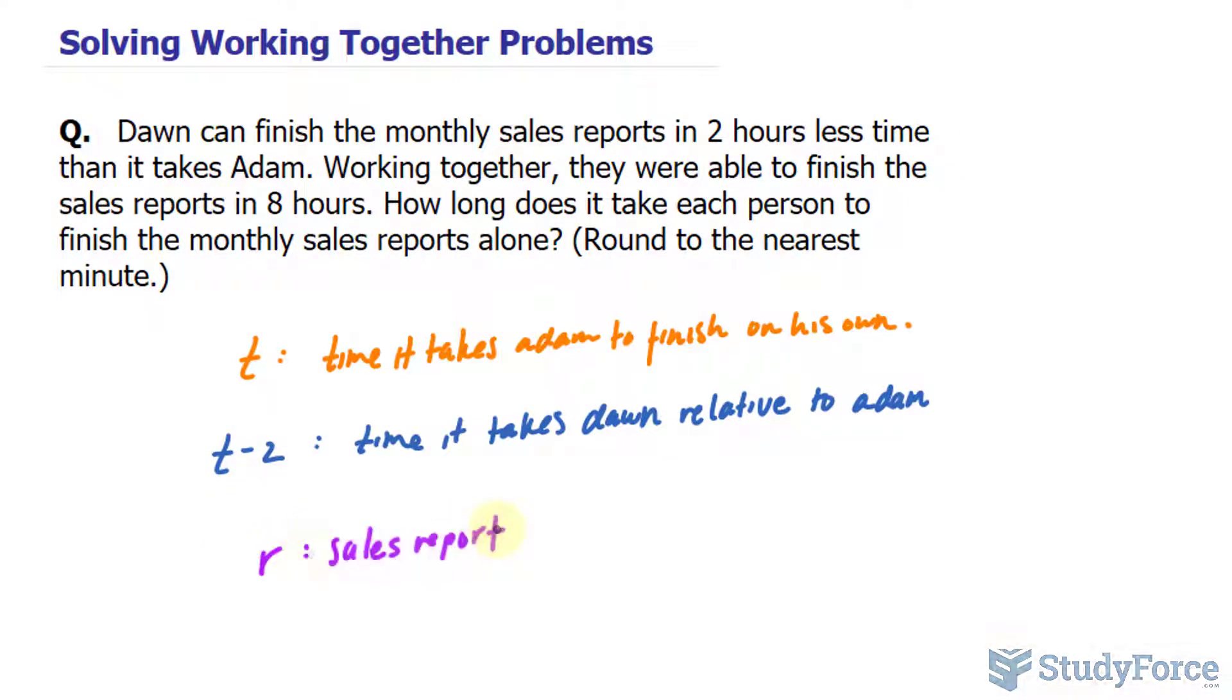And the rate for Dawn is r over t minus two.